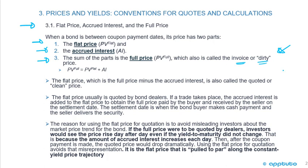You need to be careful with the terminology. The present value of the full price equals the present value of the flat price plus the accrued interest. The flat price — which is the full price minus the accrued interest — is also called the quoted or clean price. The flat price is usually quoted by bond dealers. If a trade takes place, the accrued interest is added to the flat price to obtain the full price paid by the buyer and received by the seller on the settlement date.